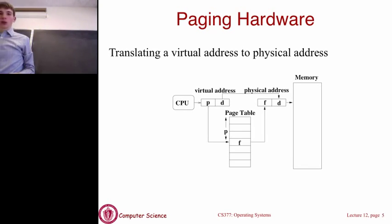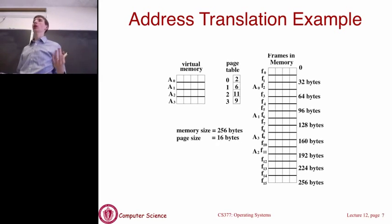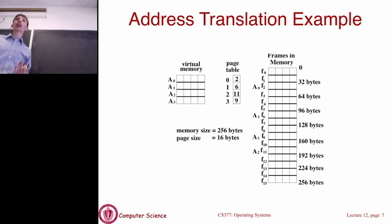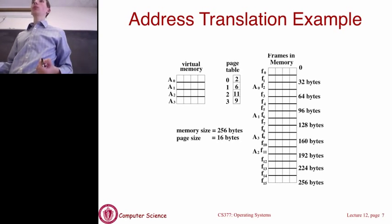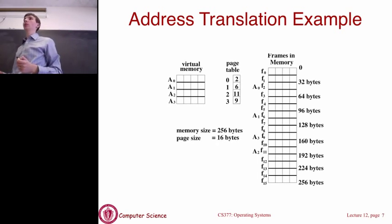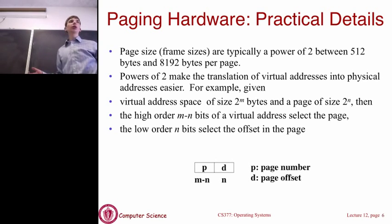Let's quickly recap the address translation example. Given some virtual address, how do we actually pull out the page number? The way we do this in hardware is we have some address bits — say an 8-bit virtual address — and we say some of those bits, the first couple, encode the page number, and the last couple of bits encode the offset into the page.